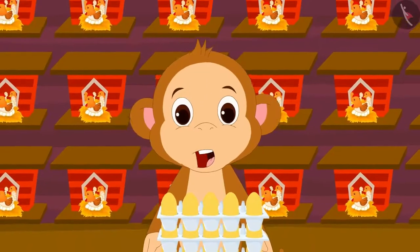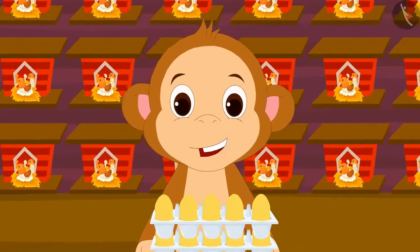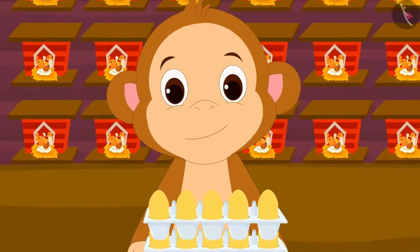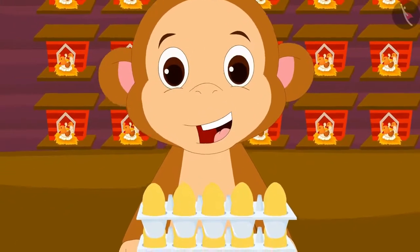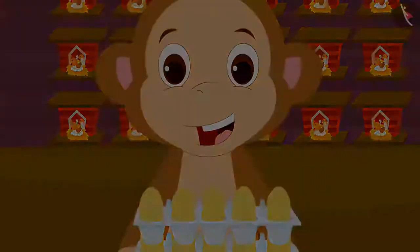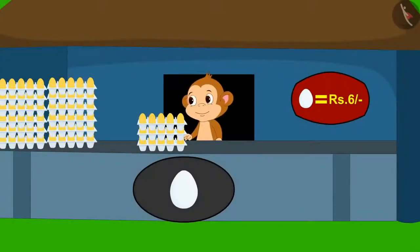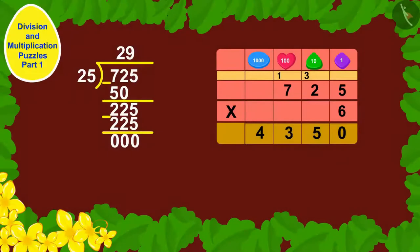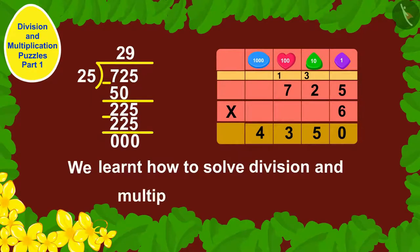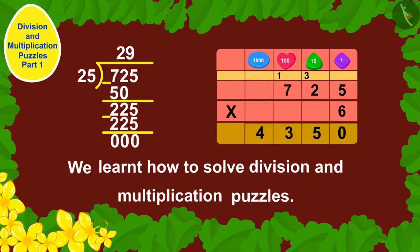Babban was delighted — he had 4,350 eggs! He opened a new shop and started selling eggs. Children, in this video, we learned how to solve division and multiplication puzzles. In the next video, we will see some more interesting examples of this.